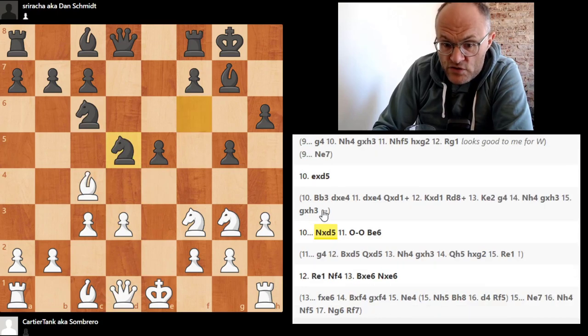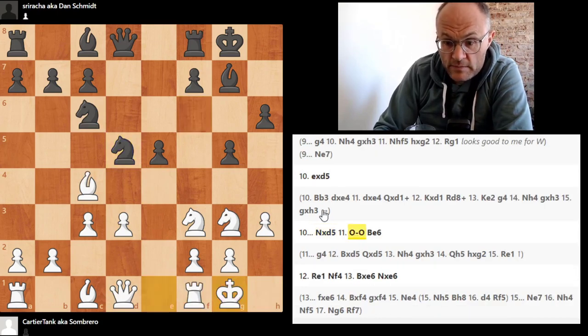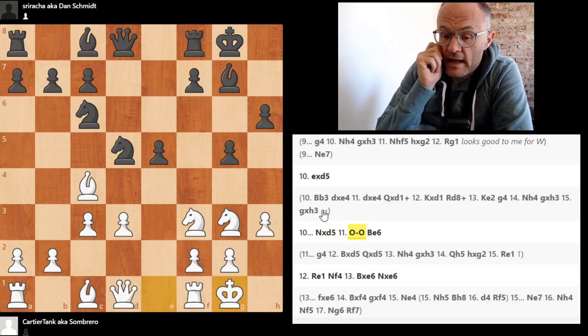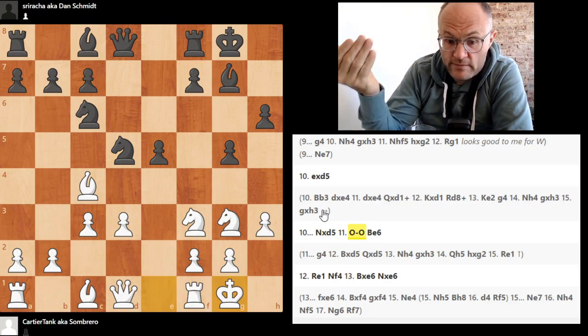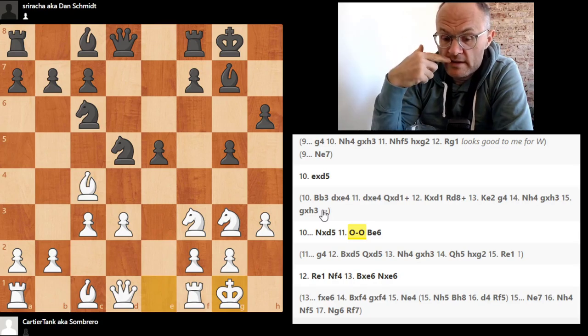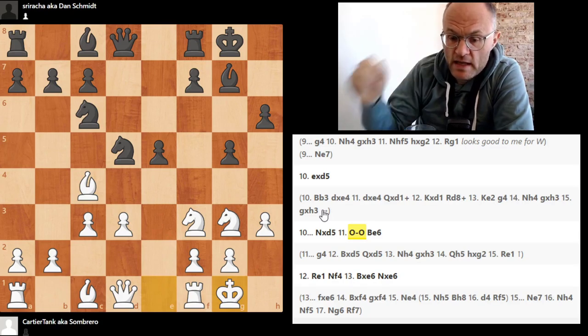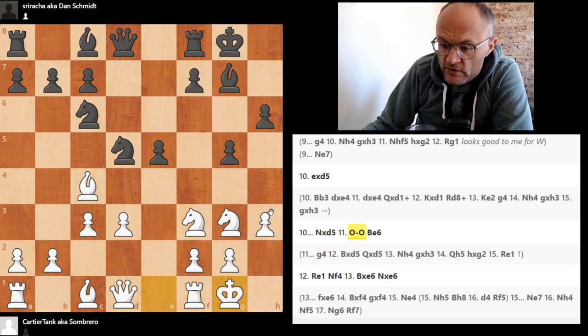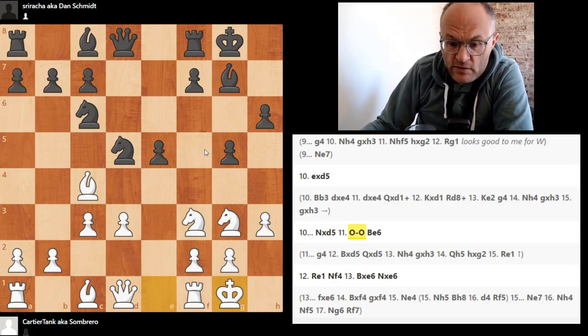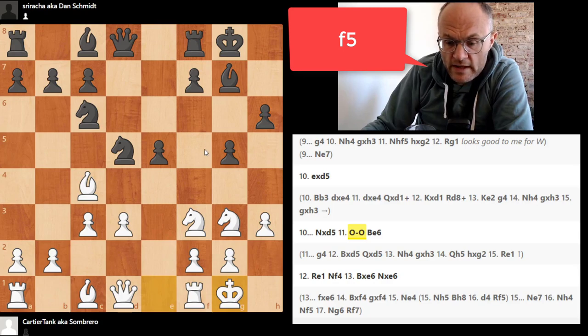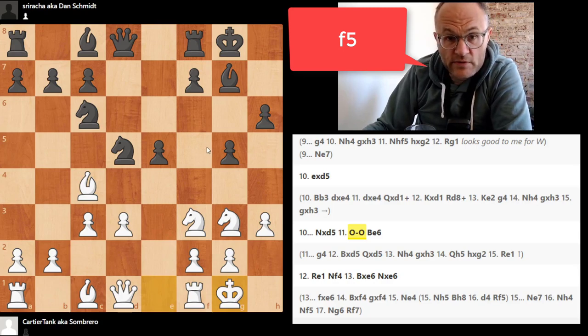And so black now, I think, can dream about controlling the light squares. And also, of course, when he got white's e-pawn, he got a chunk of the center. And you know, Sombrero invested all of this time into playing the knight to g3. Well, if the knight on g3 doesn't get to go to h5 in any meaningful way, then I'm not sure it was such a great deal.